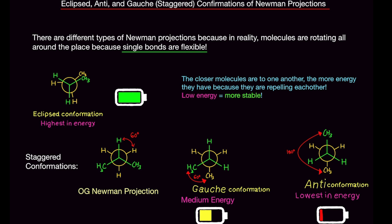There are different types of Newman projections because in reality, molecules and functional groups are rotating all around the molecule, because single bonds are super flexible. When we were drawing those original Newman projections, we were drawing them as if they were static — none of the groups rotating. In the real world, these functional groups are rotating all around the place because single bonds are super flexible.